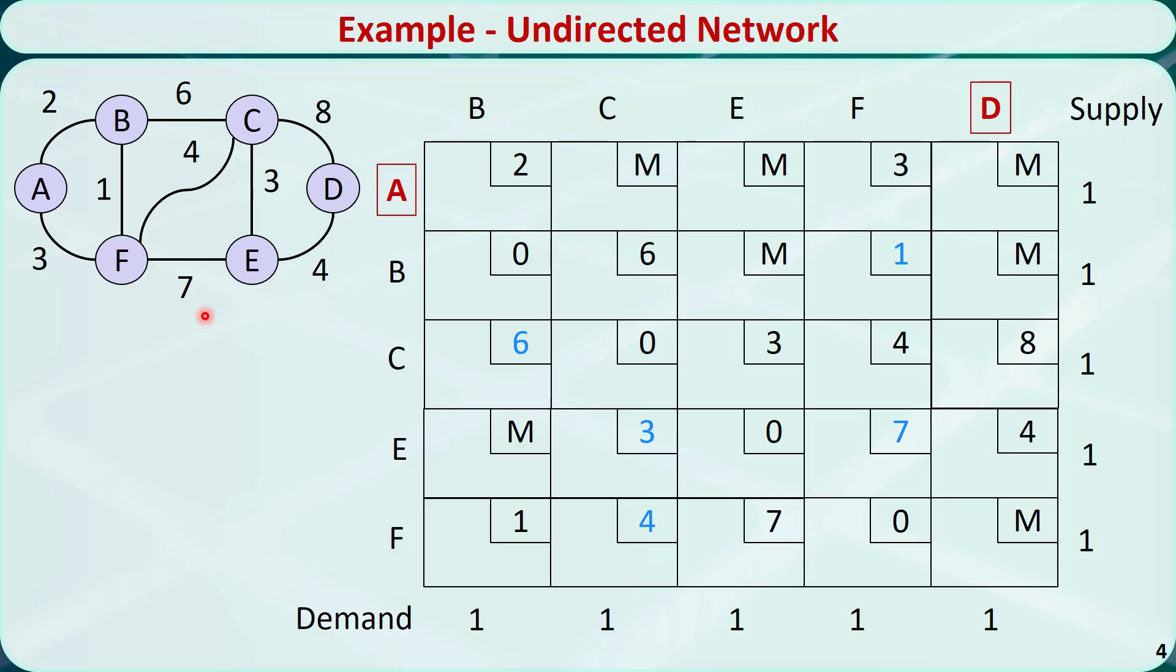Let's see another example. This is an undirected network. Previously, the unit transportation cost from B to F is M, because the flow is only allowed to go from F to B and not B to F. This is an undirected arc, so the flow is allowed to go both ways, so the unit transportation cost is 1.